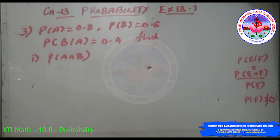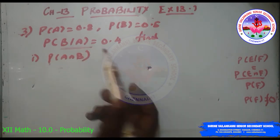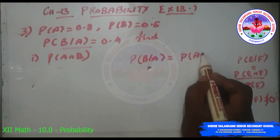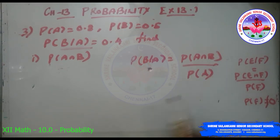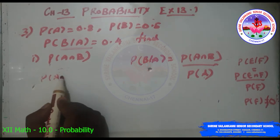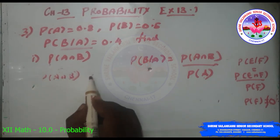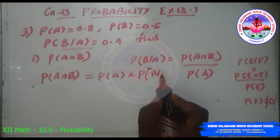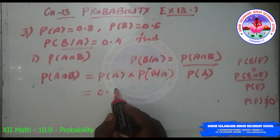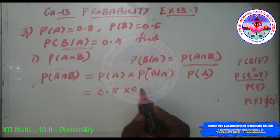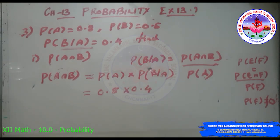To find P(A∩B): P(B|A) = P(A∩B)/P(A), so P(A∩B) = P(A) × P(B|A) = 0.8 × 0.4 = 0.32.